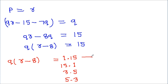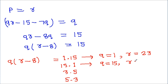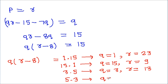We can write q(r - 8) = 15 as 1×15, 15×1, 3×5, or 5×3. So: q = 1 and r = 23; q = 15 and r = 9; q = 3 and r = 13; or q = 5 and r = 11. Now q = 1 is not prime, so the first case is not possible. q = 15 and r = 9 are not prime, so the second is not possible. q = 3 and r = 13 are both prime, so it is valid. q = 5 and r = 11 are both prime, so it is also valid.